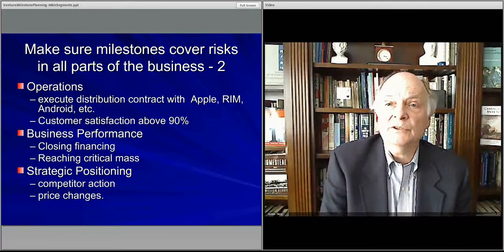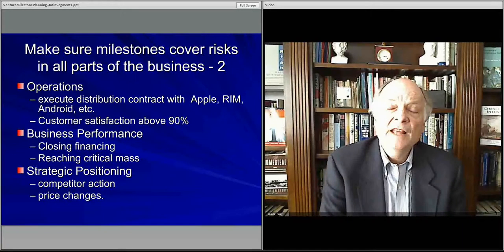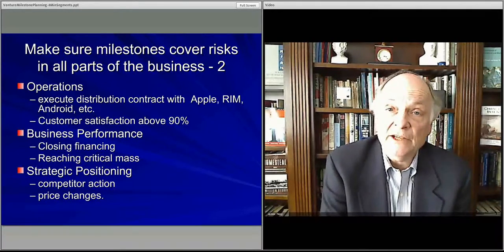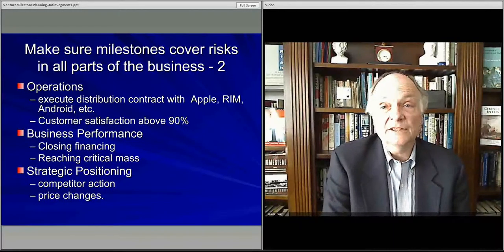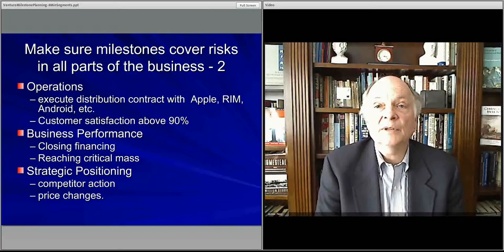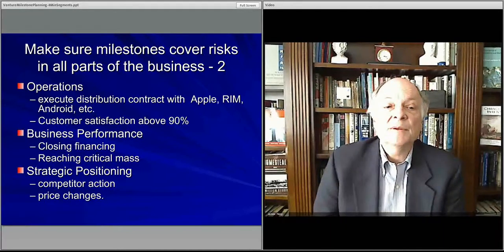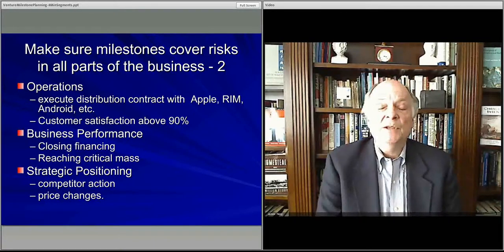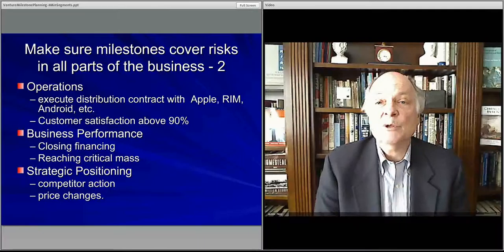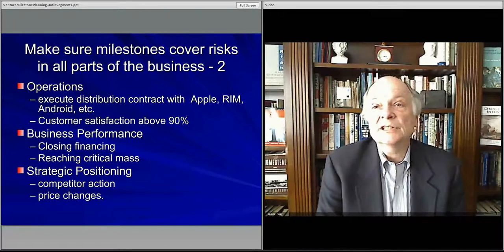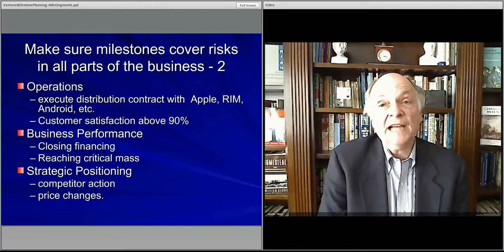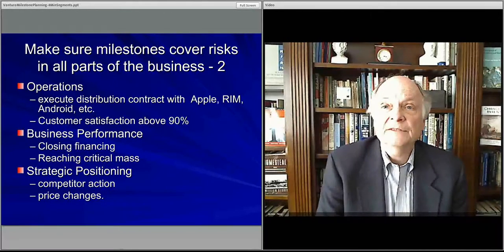Then you want some business performance objectives: closing a financing round, reaching a certain level of sales or profit, breaking even on cash flow, or reaching a critical mass where you have enough customers, sales, and profits to fund operations and continue investing in growth. Strategically, you might have won key customers, repeat customers or subscribers, and shown you can respond to competitor pricing. You might also want to protect intellectual property through a patent or trademark.